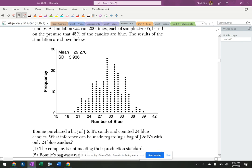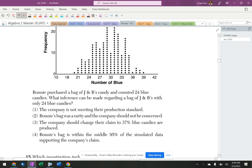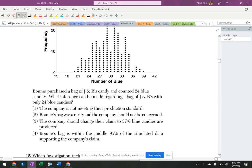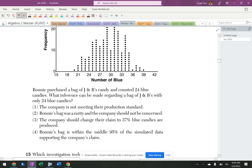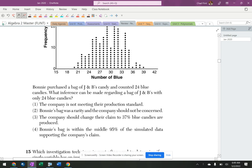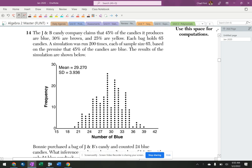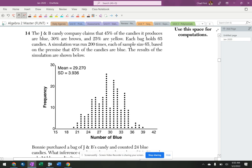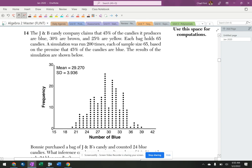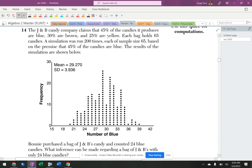It's got a mean, it's got a standard deviation. So Bonnie purchased her candy and counted 24 blue candies. What inference can be made regarding the bag of J&Bs with only 24 blue candies? So let's see what we got going on here. So this is the confidence interval stuff that we have to deal with. They're saying that 45% of the candies it produces are blue, and this is the number of blue candies, but it's not in percents.